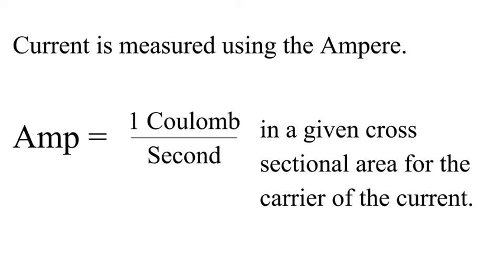Current is measured using the ampere. The ampere, or amp, whose symbol is A, is named after André-Marie Ampère from France. The amp is defined as one coulomb over a second in a given cross-sectional area for the carrier of the current.